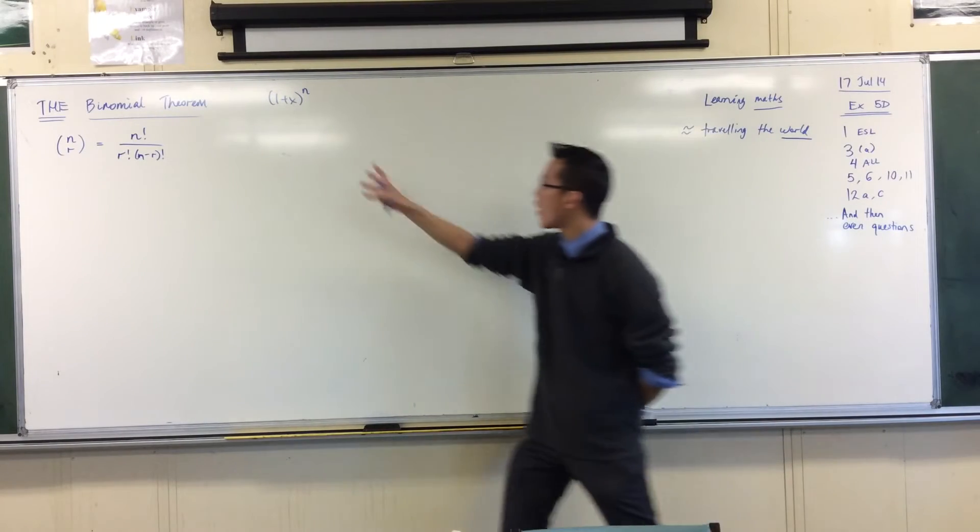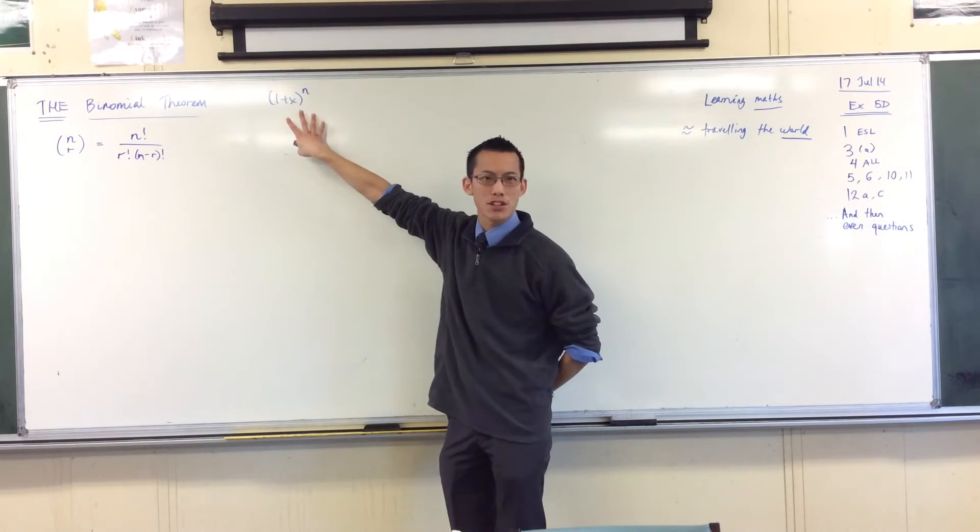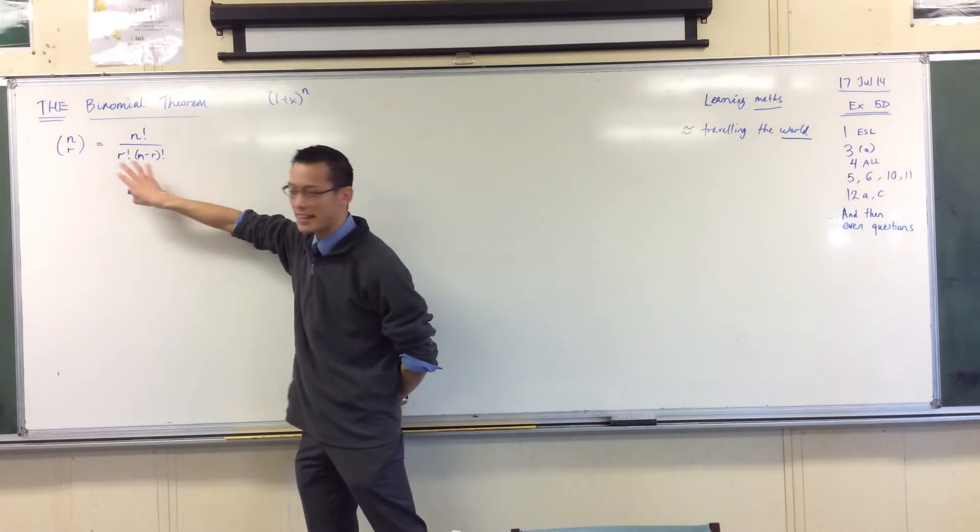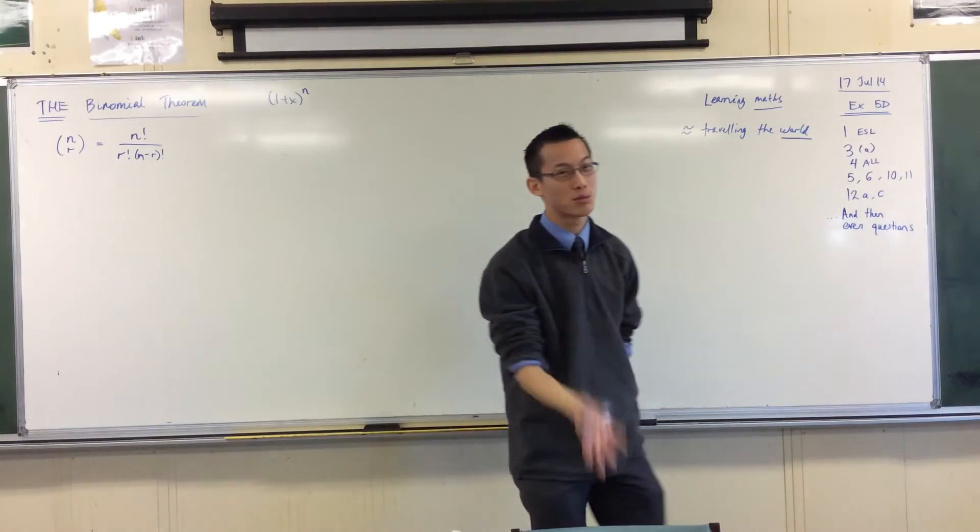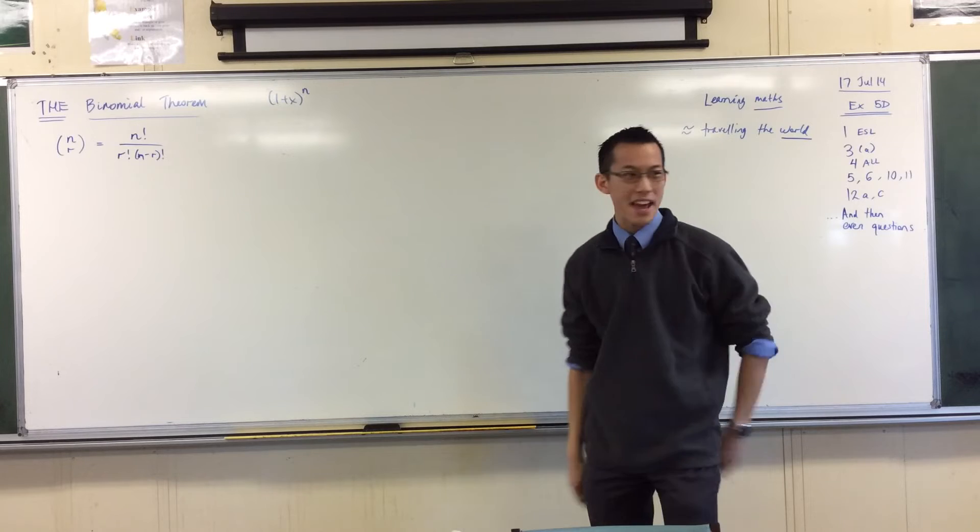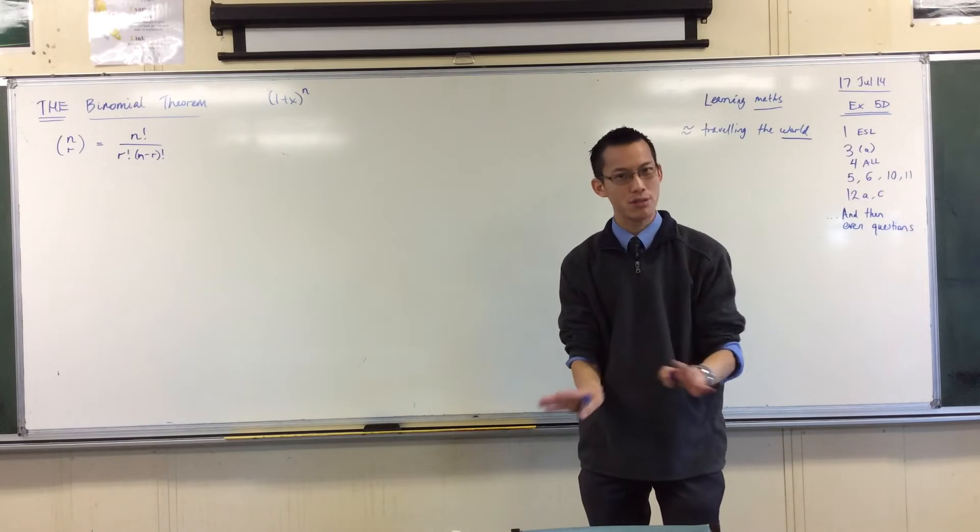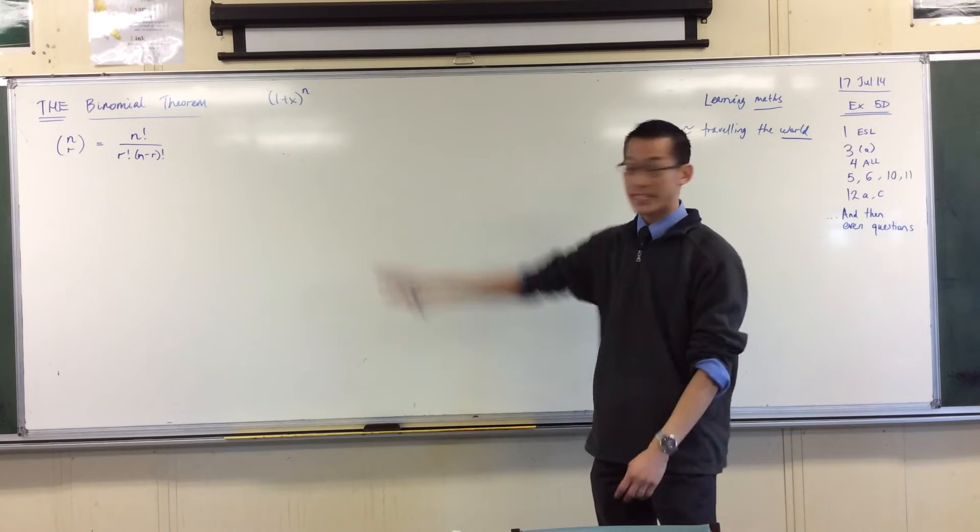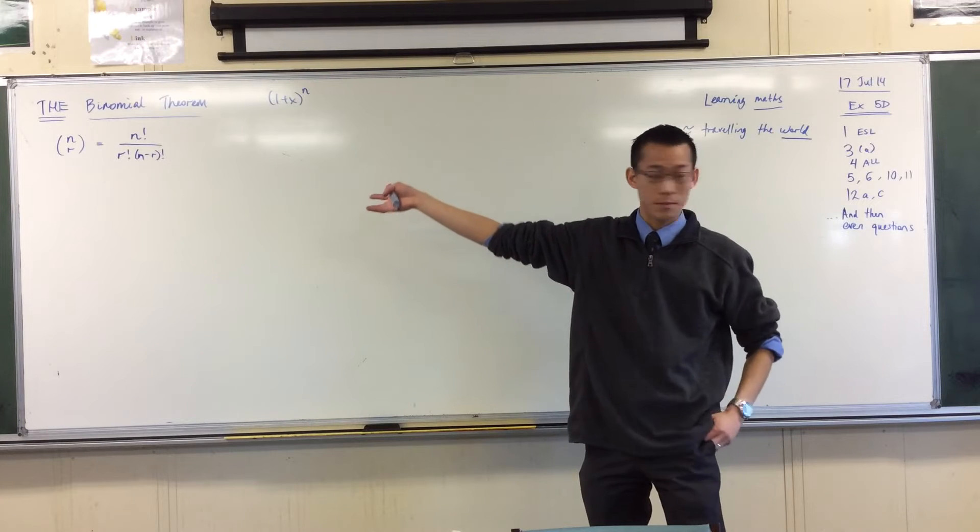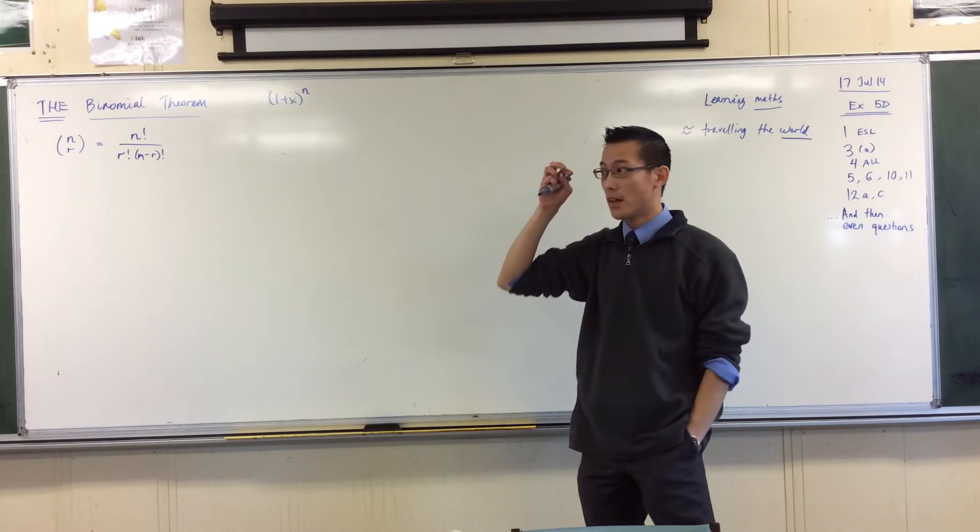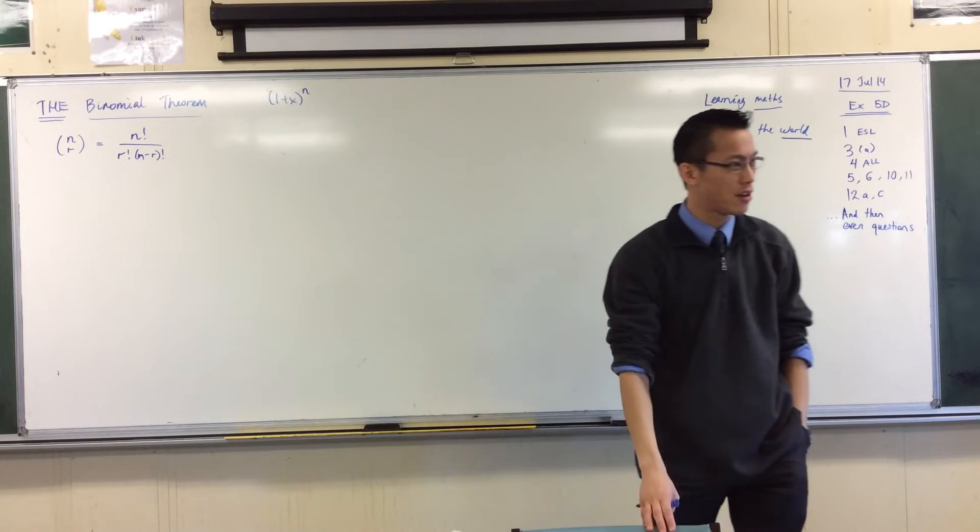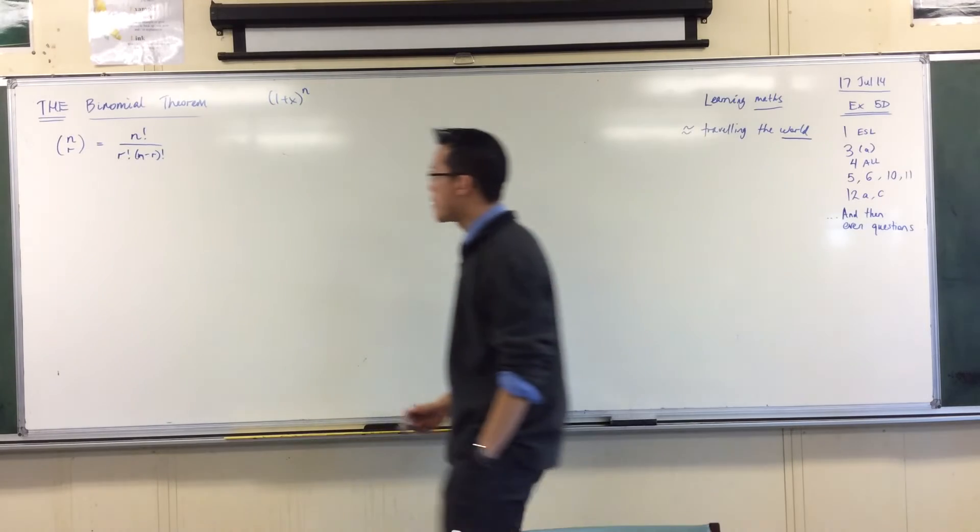So you've got coefficients of this algebra stuff, and then we somehow connected it to factorials that we got out of Pascal's triangle, right. Now, I gave you a demonstration. I would not call what I showed you yesterday a proof, but it still landed us on the right solution.